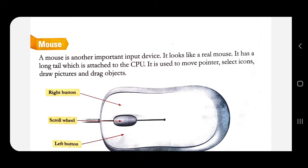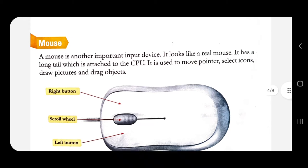Hello kids, today we will continue with our computer chapter, chapter number three: Keyboard and Mouse. In the last class we learnt about what is a keyboard — keyboard is an input device which has many keys. We also learnt about its keys: there are many keys on the keyboard, like alphabet keys, numeric keys, and special keys.